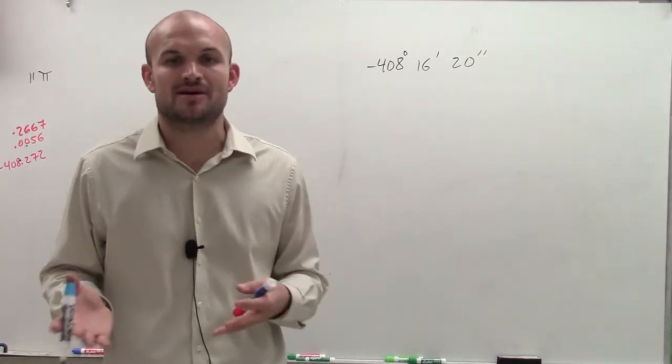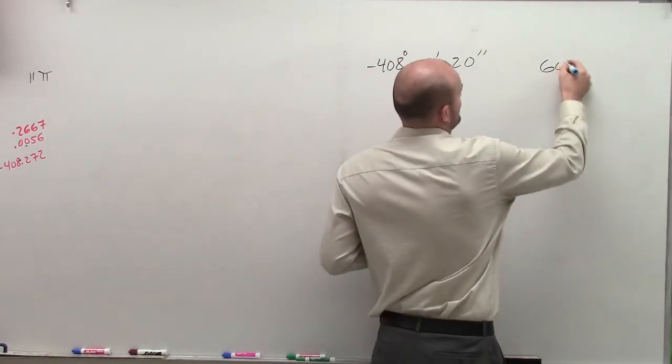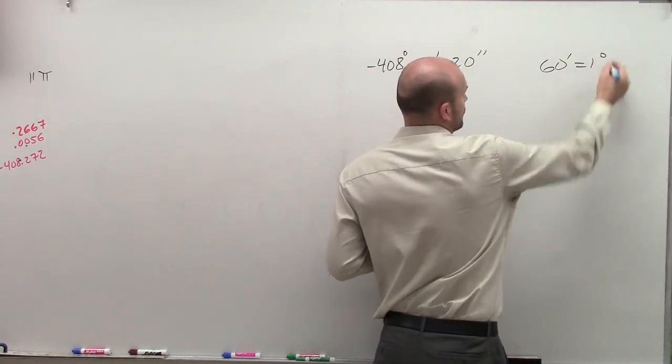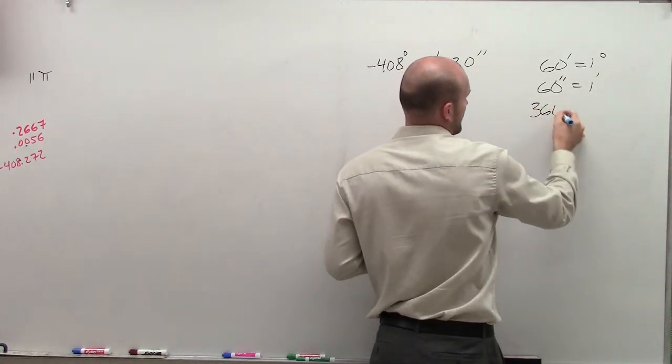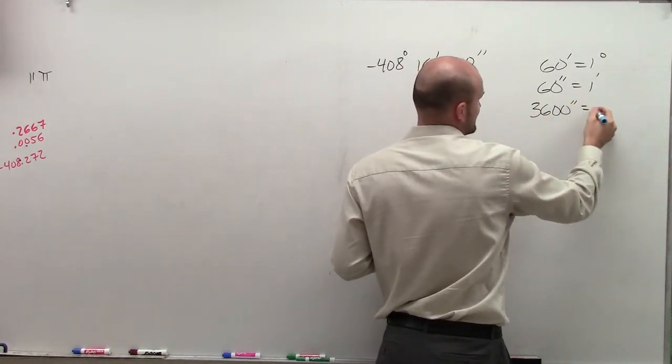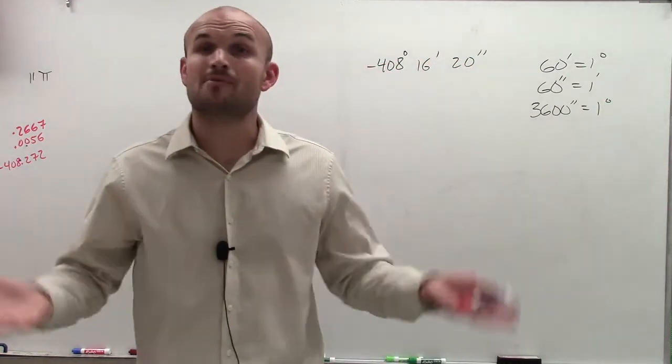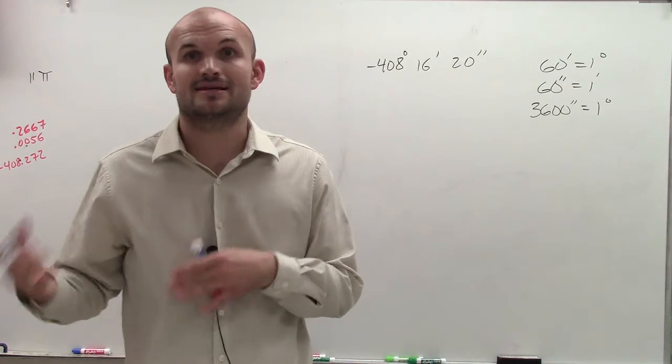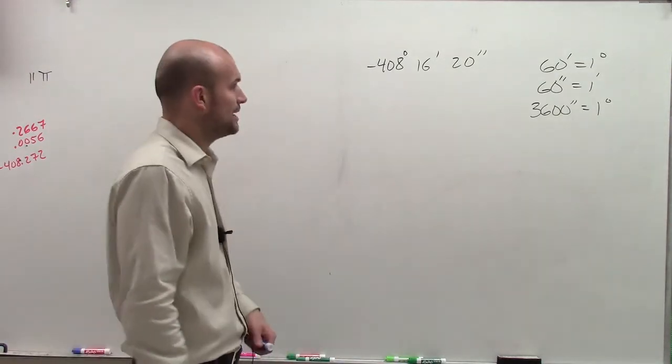Minutes and seconds are a way to break up a degree. It works like this: 60 minutes equals 1 degree, while 60 seconds equals 1 minute. Therefore, 3,600 seconds equals 1 degree. It's like how we break up time—60 minutes in an hour. You can relate an hour with a degree if that helps.